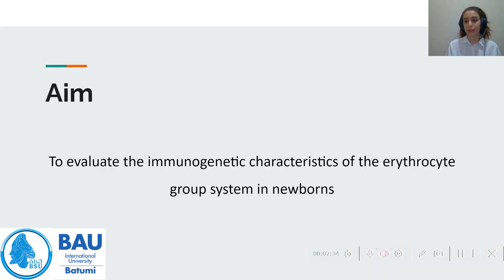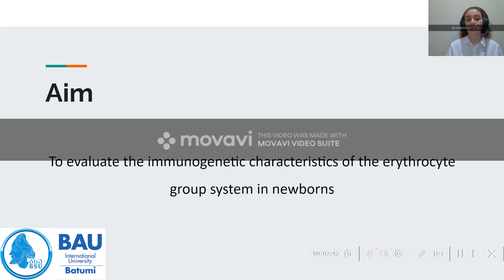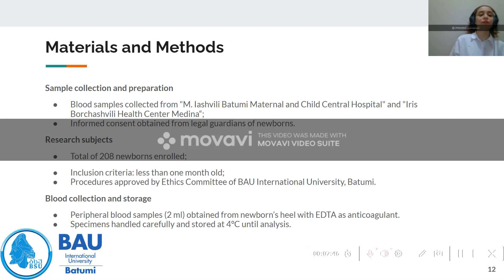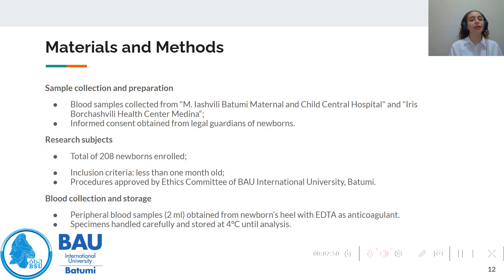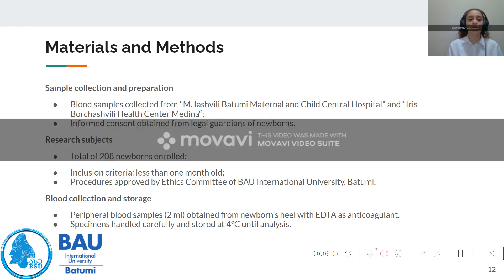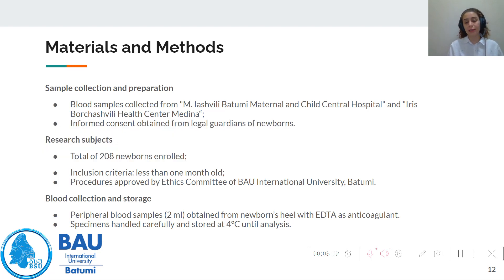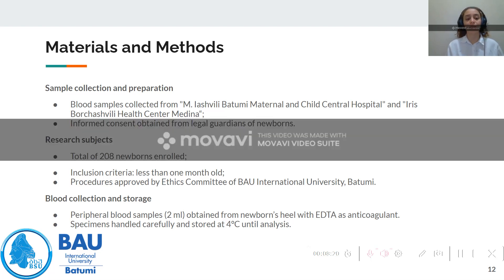The aim of our study is to evaluate the immunogenetic characteristics of the erythrocyte group system in newborns. Blood samples were collected from Yashvili Batumi Maternal and Child Central Hospitals and Iris Buryashvili Health Center Medina, both located in Batumi, Georgia. Informed consent was obtained from the legal guardians of the newborns. Our study enrolled 208 newborns with an inclusion criterion of being less than one month old, and no exclusion criteria. Procedures were approved by the ethics committee of BAU International University, Batumi, Georgia.